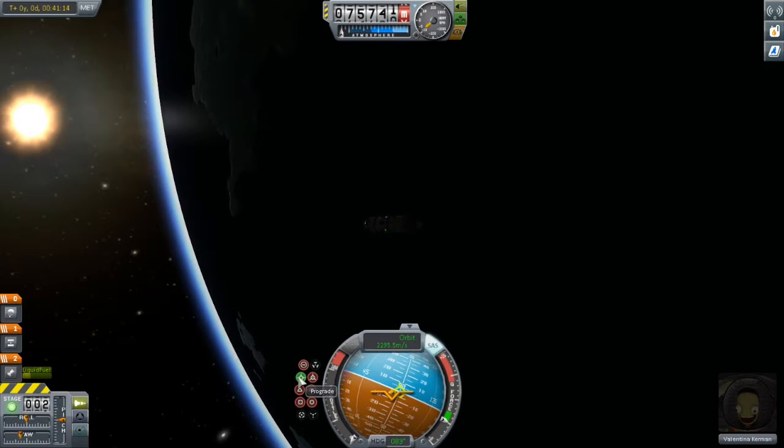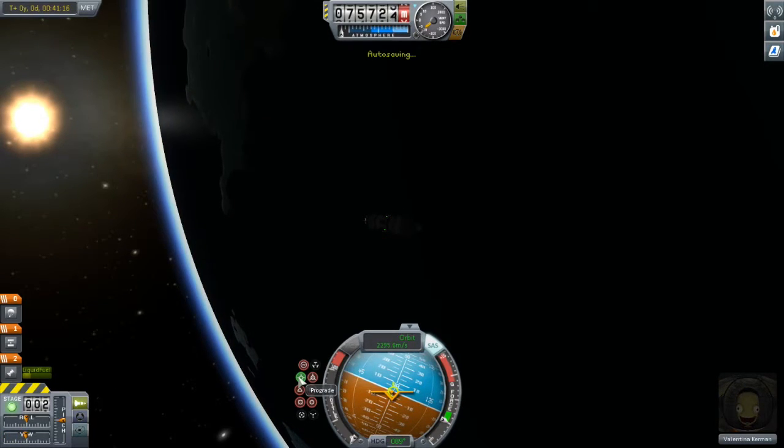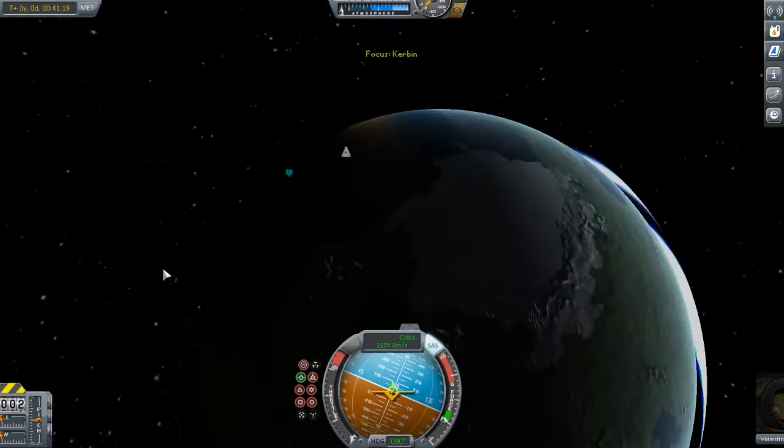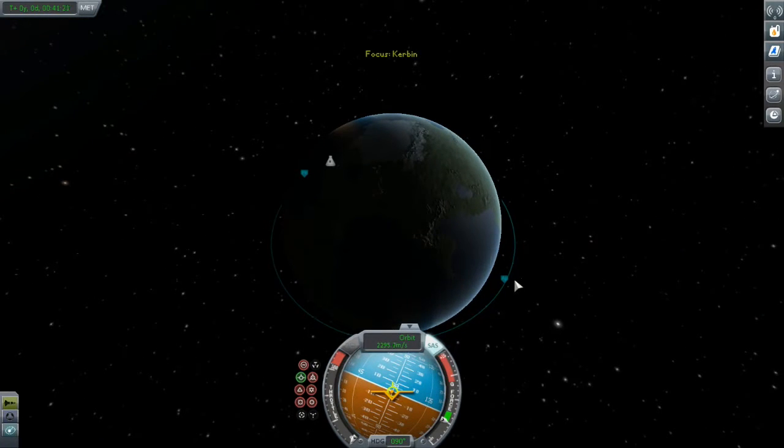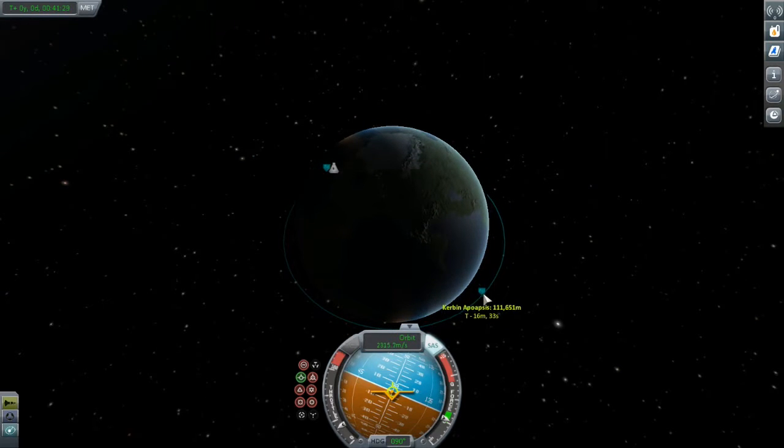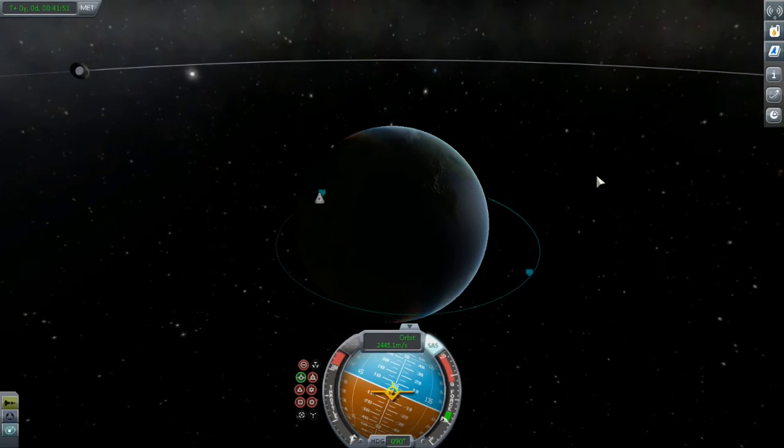But anyway, as you can see, I've already deleted the maneuver node. So I'm just going to point myself in a prograde direction, then go out to map view. And I'm just going to burn forward until my apoapsis gets up to 300 kilometers. There really is no need for a maneuver node for this part. Other than figuring out what that delta V requirement was going to be. There we go, that's good enough.